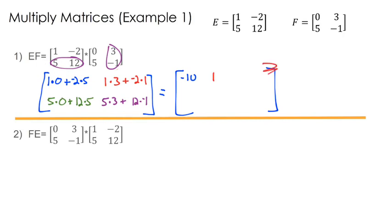Well, now I may have a matrix too big, haven't I? Let me shrink it down a little bit. And then we're going to do 0 plus 60. And then lastly, we do 15 plus negative 12. And there's our answer matrix.